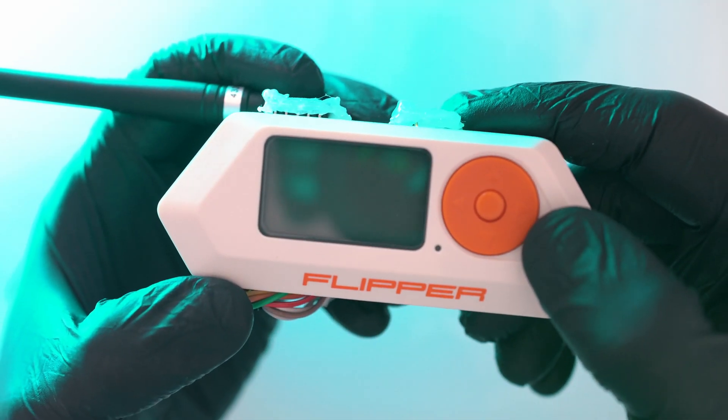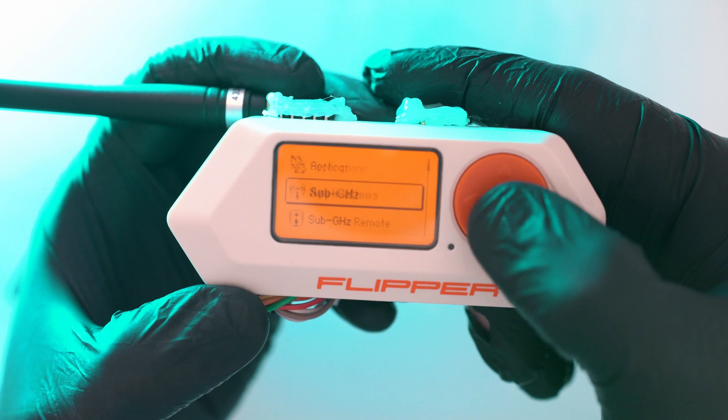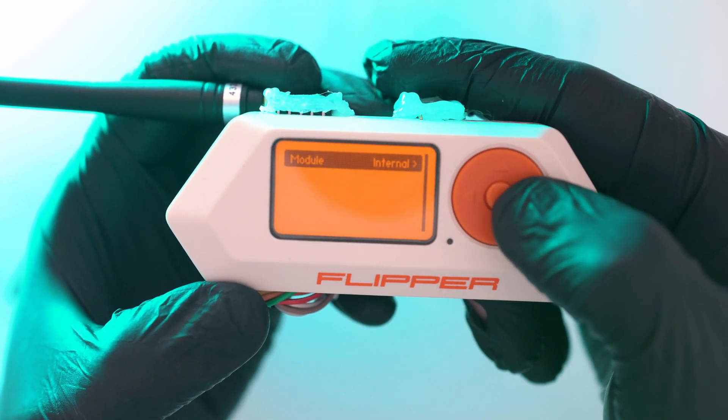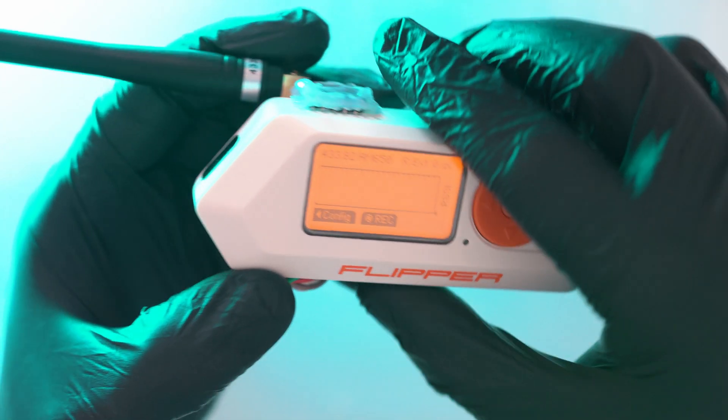Turn on the Flipper. Go sub gigahertz. Radio settings and choose external. Now Flipper is using newly attached module.